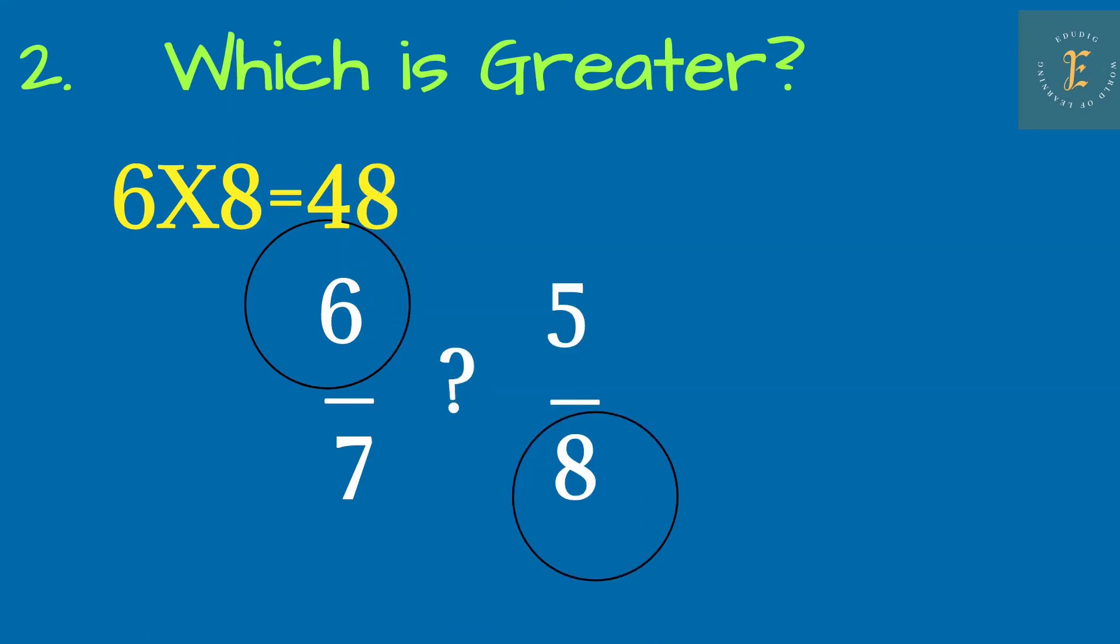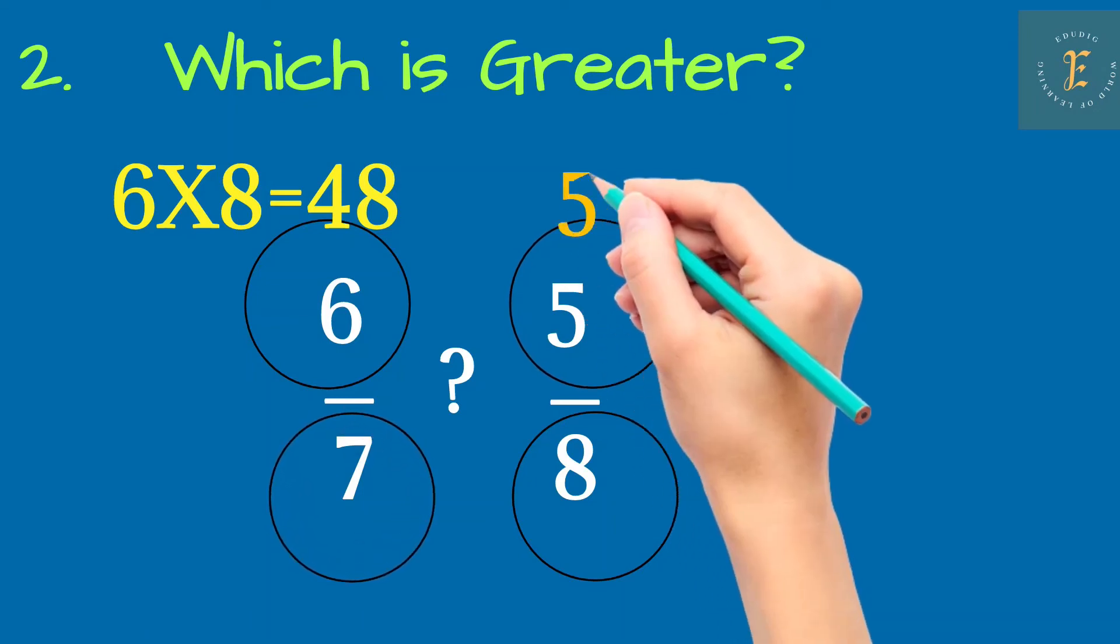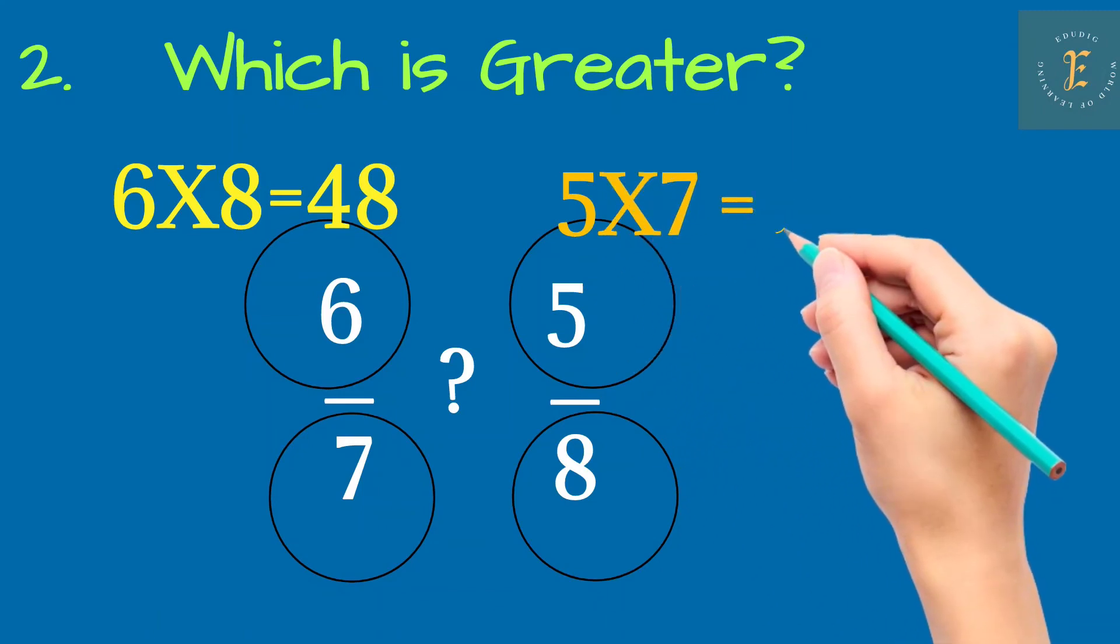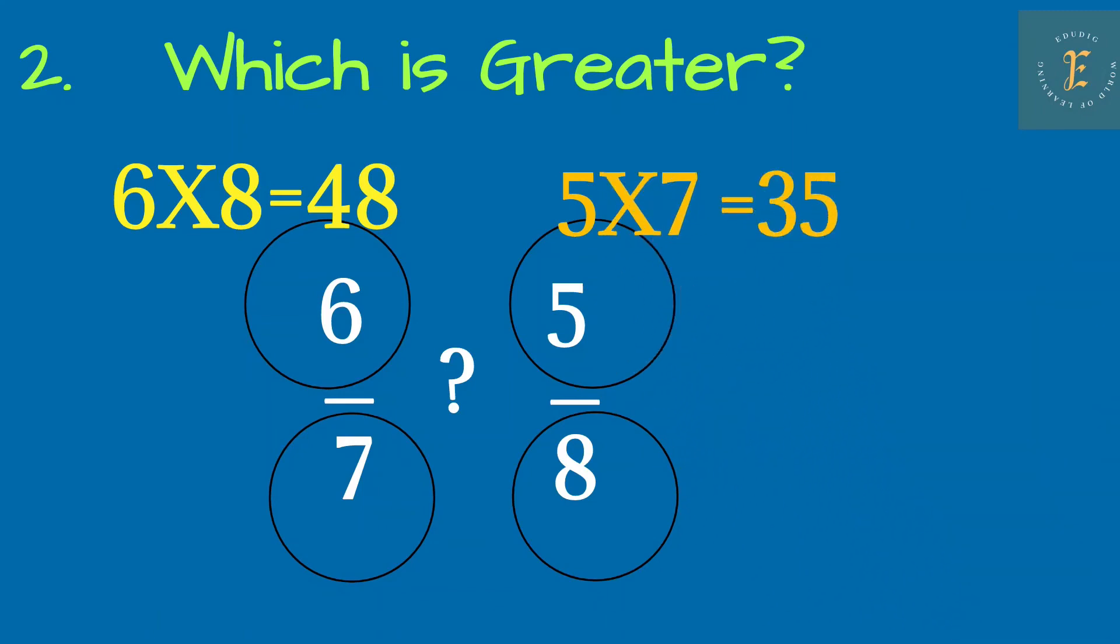In this case, you are getting the answer 48. And if you multiply the numerator of second number and the denominator of first number, you cross multiply it, you will get the answer as 35.